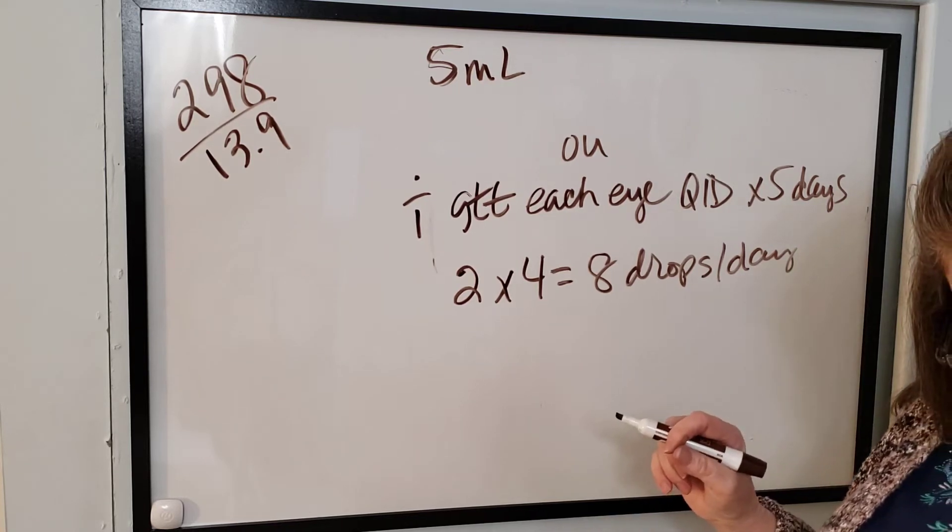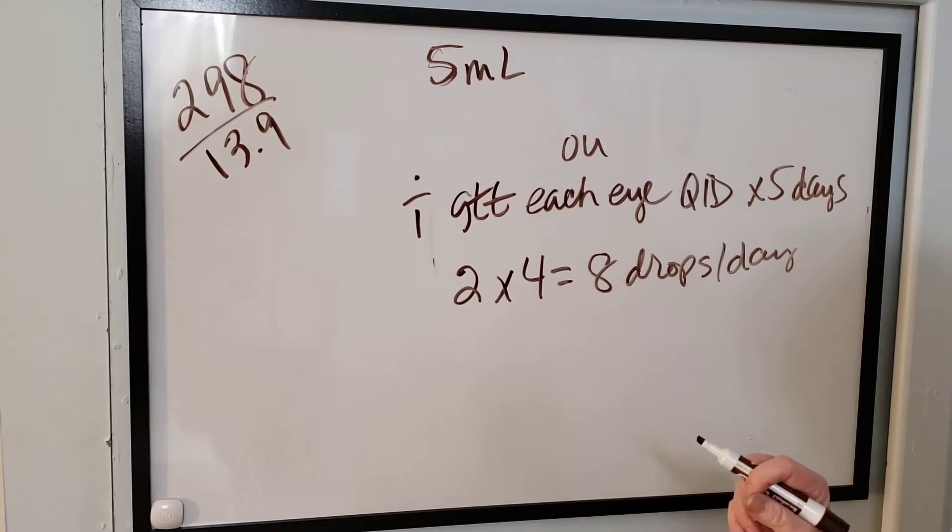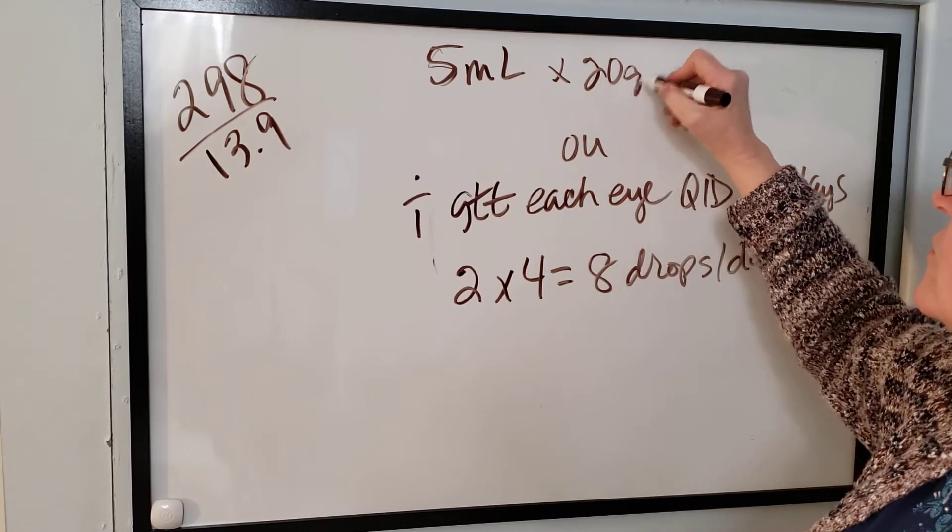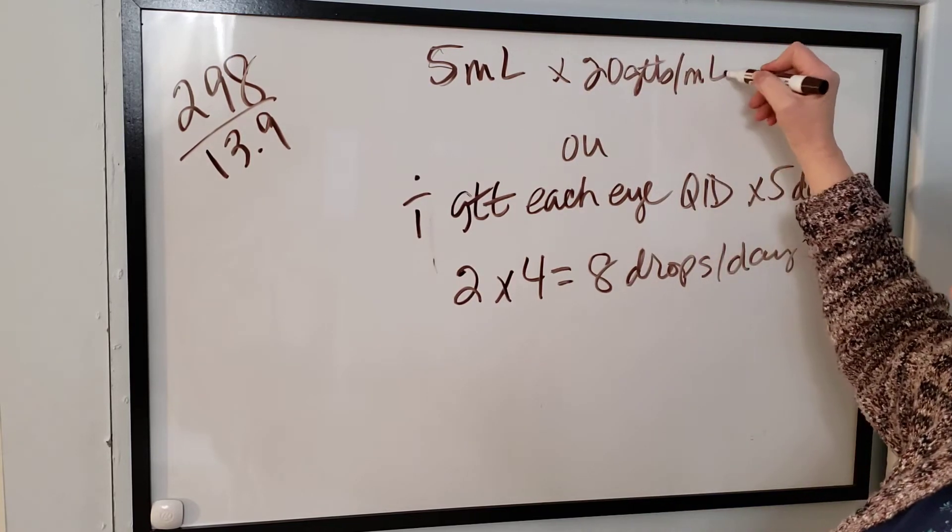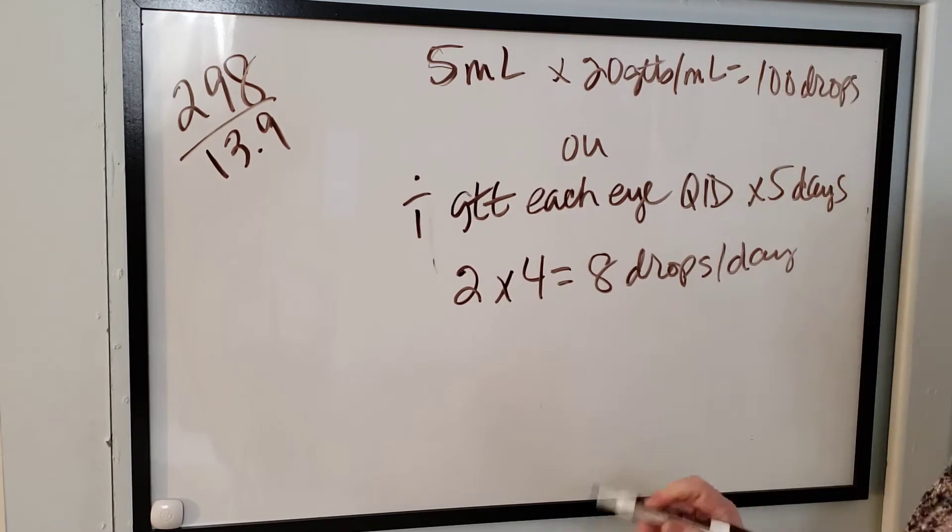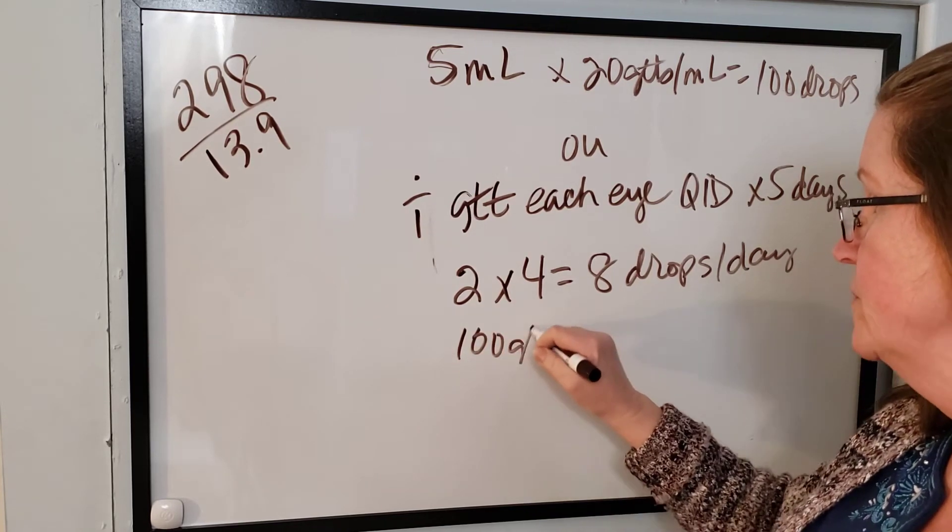And so they're using 20 drops per milliliter on this one. So five mLs times 20 drops per milliliter is going to give me a hundred drops. Okay, so that's my total volume according to this is a hundred drops.